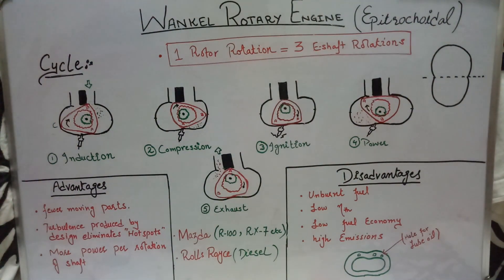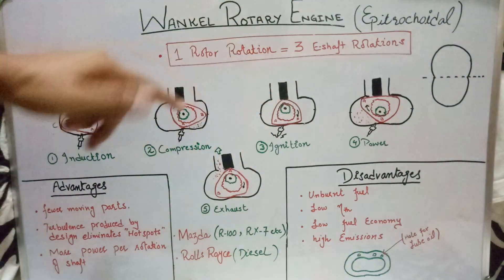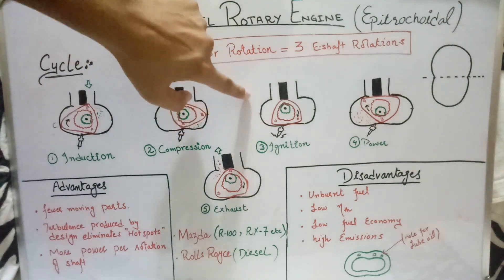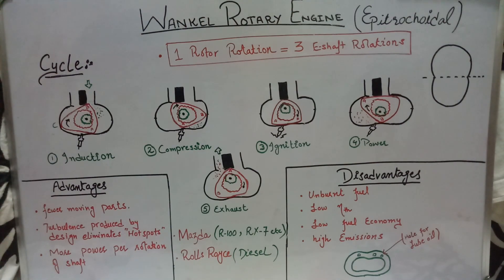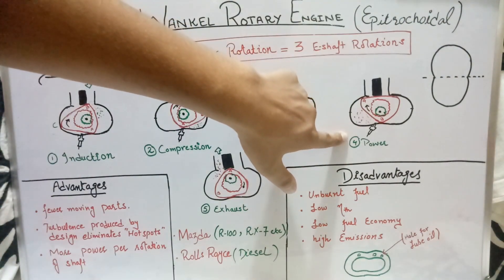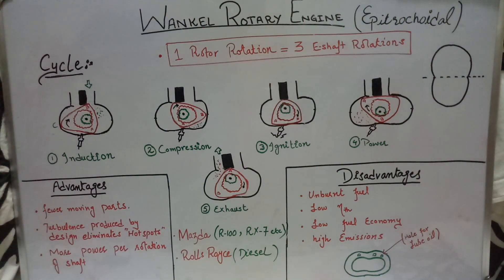Moving towards the advantages of the Wankel rotary engine: it has few moving parts — unlike reciprocating engines, it has no pistons, no valve trains, and no connecting rods. The turbulence produced by the rotor avoids hot spots in the housing material, which prevents knocking and detonation. More power is produced per shaft rotation compared to a four-stroke petrol engine, which produces one power stroke per two shaft rotations.